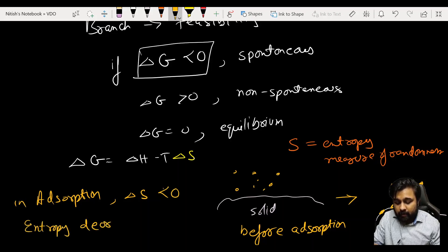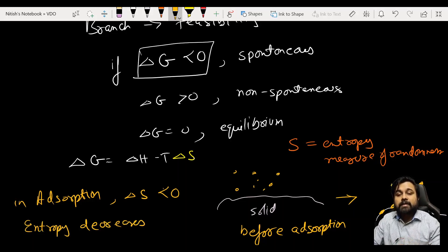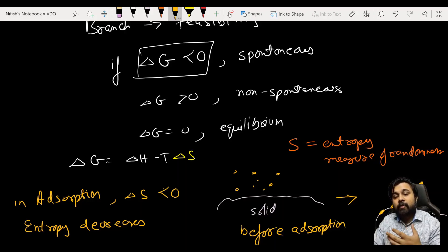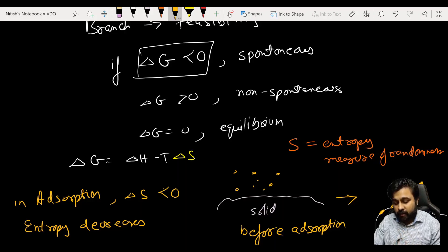This applies to any adsorption, not only gas adsorption. Consider the example of charcoal and ink - when we add charcoal it adsorbs the solute particles (the ink) on its surface. Before adsorption, the solute particles were free in the solution, roaming around. But after adsorption they are stuck at the surface of the charcoal. So in adsorption, the entropy of the system decreases.